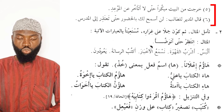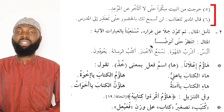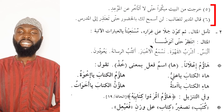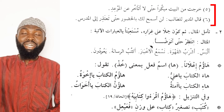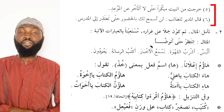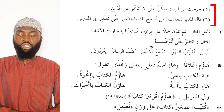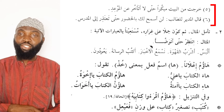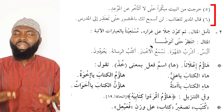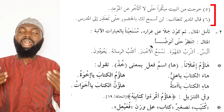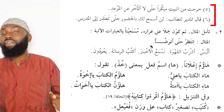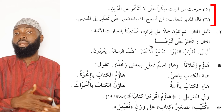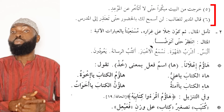Sentence five: kharajtu min albayti mubakkiran hatta la ata'akhkhara 'an al-maw'id — I left the house early in order not to delay for the appointment. The word Hatta here means li keila — in order for me not to. It is La Mutalil, coming as a reason. The reason I went out early is in order not to be late for the appointment.